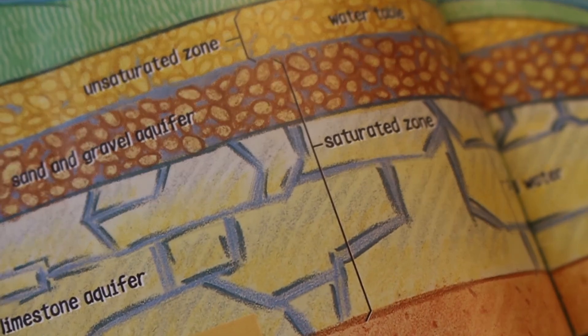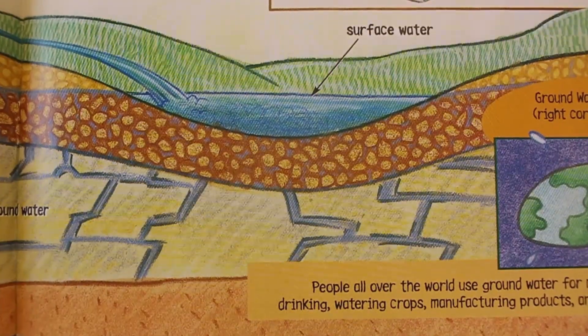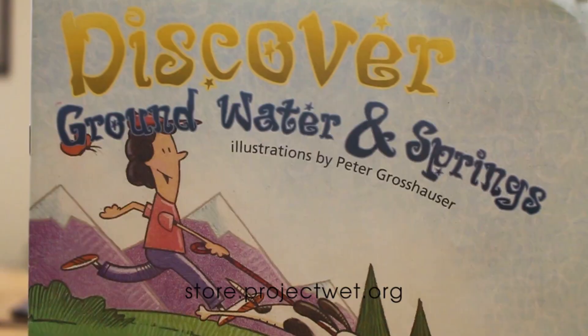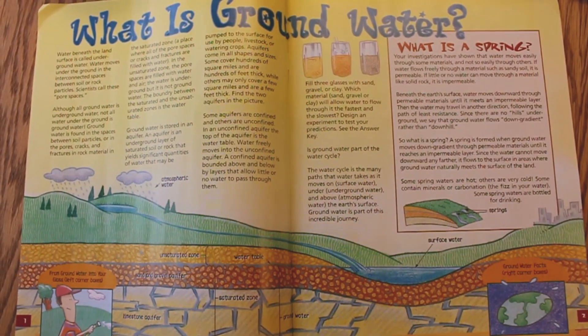The upper boundary of the saturated zone is called the water table, and any unsaturated zones above that are not considered groundwater. If this all sounds a little confusing, you can brush up on your groundwater knowledge with the Discover Groundwater in Springs Kids Activity Booklet, available at store.projectwet.org — and you'll need it for this activity.